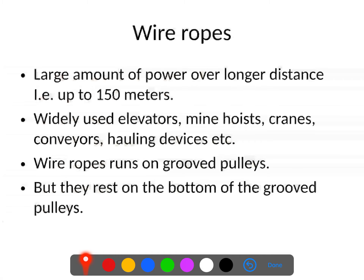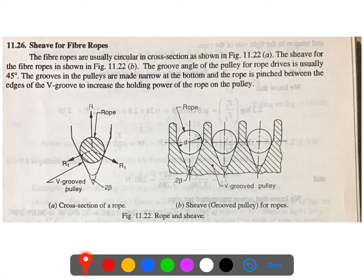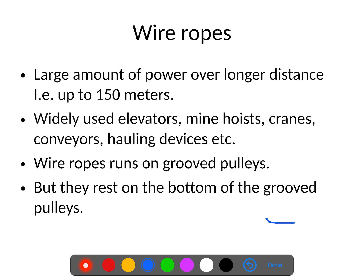Wire ropes are used when a large amount of power needs to be transmitted over longer distances, up to 150 meters. These are widely used in elevators, mine hoists, cranes, conveyors, holding devices, and so on. Wire ropes run on grooved pulleys. Unlike fiber ropes, which do not rest at the bottom of the groove, wire ropes rest at the bottom of the groove pulleys. That is the key difference to take into consideration.